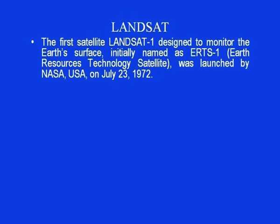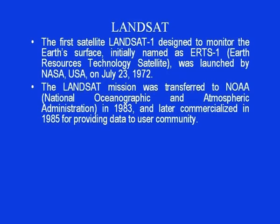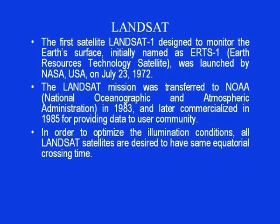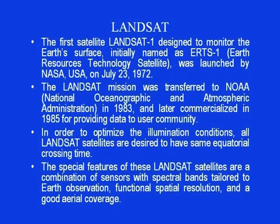The first satellite, Landsat 1, designed to monitor the earth's surface and initially named ERTS-1 (Earth Resources Technology Satellite), was launched by NASA on July 23, 1972. The Landsat mission was transferred to NOAA in 1983 and later commercialized in 1985. To optimize illumination conditions, all Landsat satellites are designed to have the same equatorial crossing time. Special features include a combination of sensors with spectral bands tailored to earth observation, functional spatial resolution, and good areal coverage.